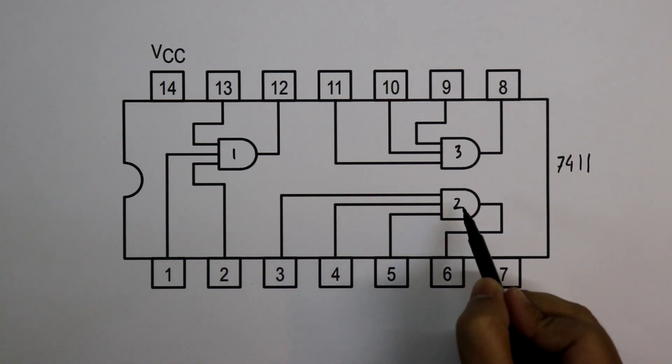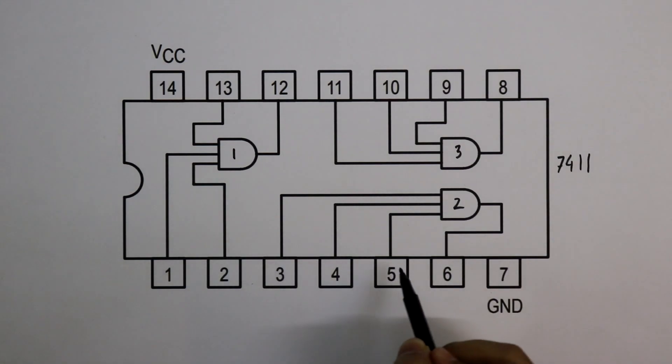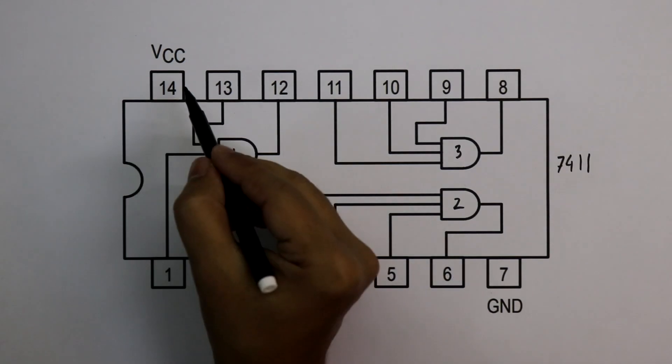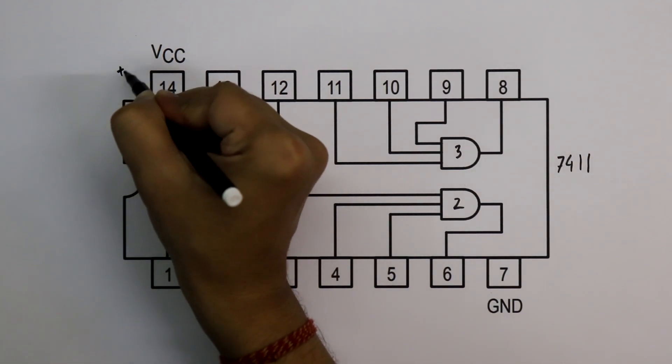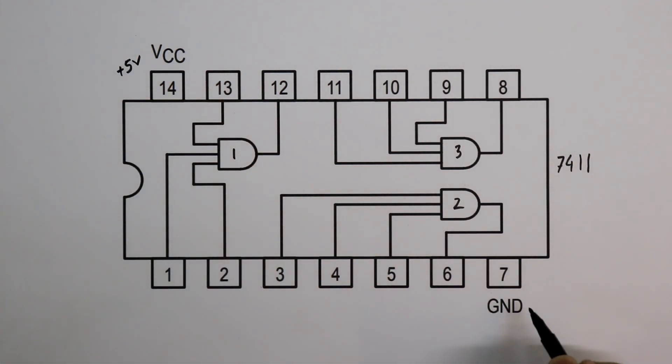For the practical, I will use gate number 2. That is, I will use pin number 3, 4, 5 as inputs and pin number 6 as output. Pin number 14 is VCC and we will connect plus 5 volts. And this is ground.